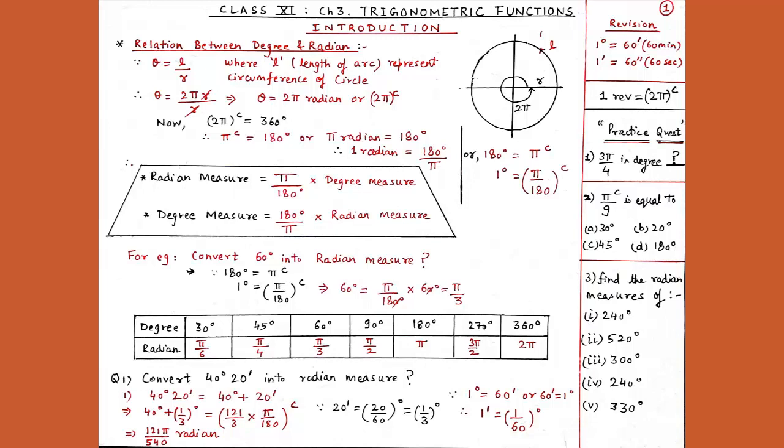Our first question for today: convert 60 degrees into radian measure. We know 180 degrees equals π radian, so 1 degree equals π upon 180 radian. Therefore, by unitary method, 60 degrees equals π upon 180 into 60. On solving, the zeros cancel and we get π upon 3. So 60 degrees in radian equals π upon 3.